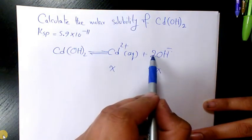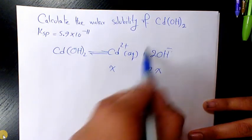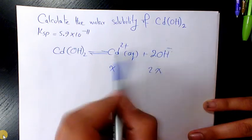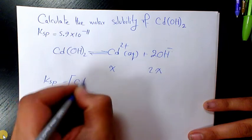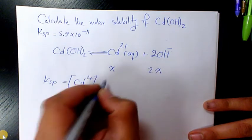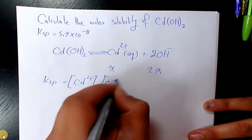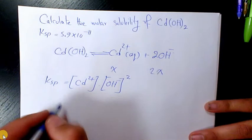It's going to be X molar and 2X in here because the coefficient is X, so the amount produced here is going to be double than cadmium. So KSP will be the concentration of cadmium ion times the concentration of hydroxide to the power of 2.